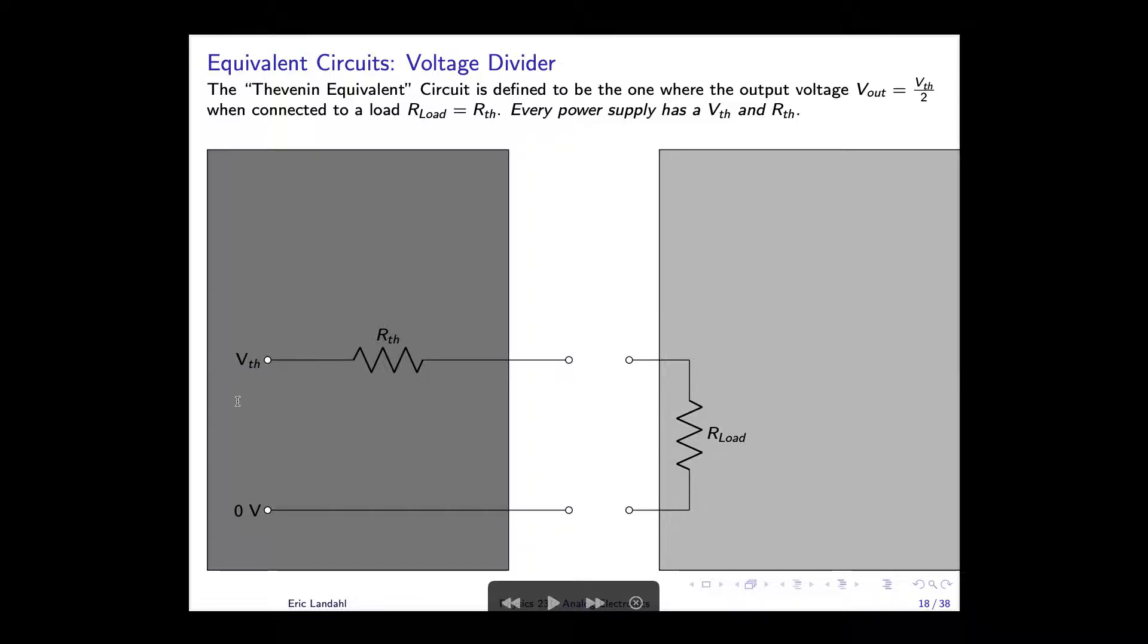If you know the Vth and know the Rth, or at least can estimate the Rth for a power supply, you can guess what's going to happen when you hook up a load. And the load itself doesn't have to be a single resistor, but it could be a whole network of different configurations, or other components, which can also be represented by a single load resistor.